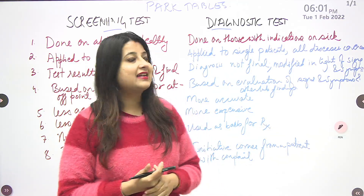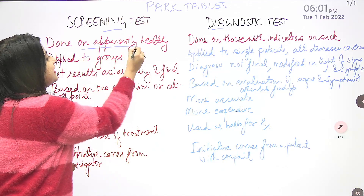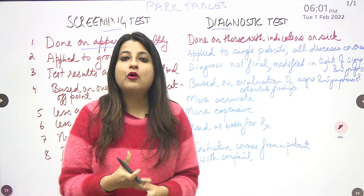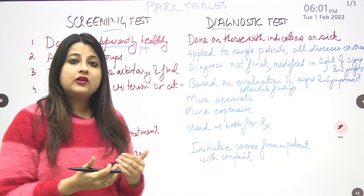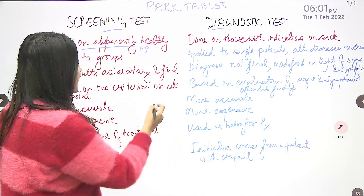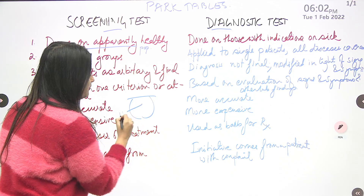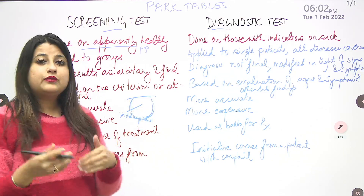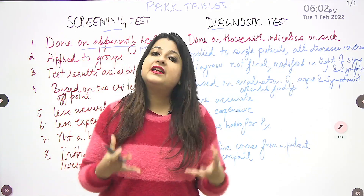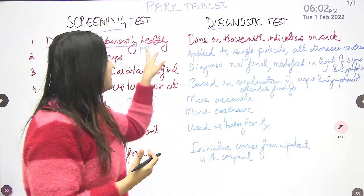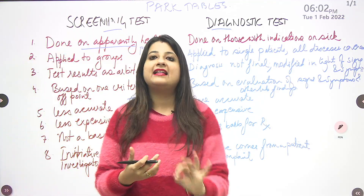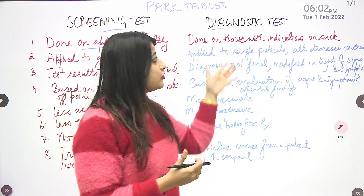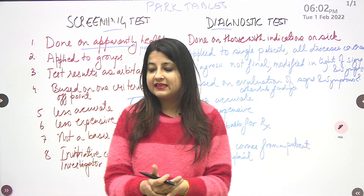First point: screening is done on an apparently healthy population — people who appear to be healthy. Screening is applied to identify the hidden portion of the iceberg, filtering out those who are likely to be developing a disease. The first difference is that screening is done on an apparently healthy population, while a diagnostic test is done on those who are actually sick — people who come to you with signs and symptoms.